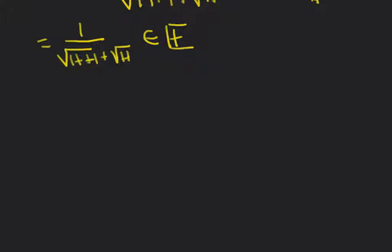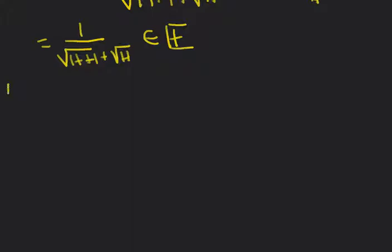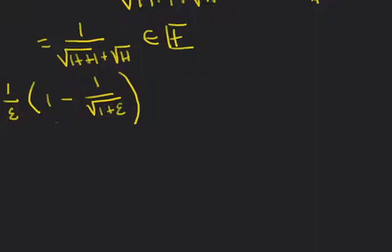One more example. Let's look at 1 over epsilon times the quantity 1 minus 1 over square root of 1 plus epsilon. The 1 over epsilon is an infinite number. The term 1 over square root of 1 plus epsilon — since epsilon is infinitesimal, this reciprocal is an infinite number. So when we multiply through, we're looking at a difference of infinite numbers, which is still an indeterminate form.